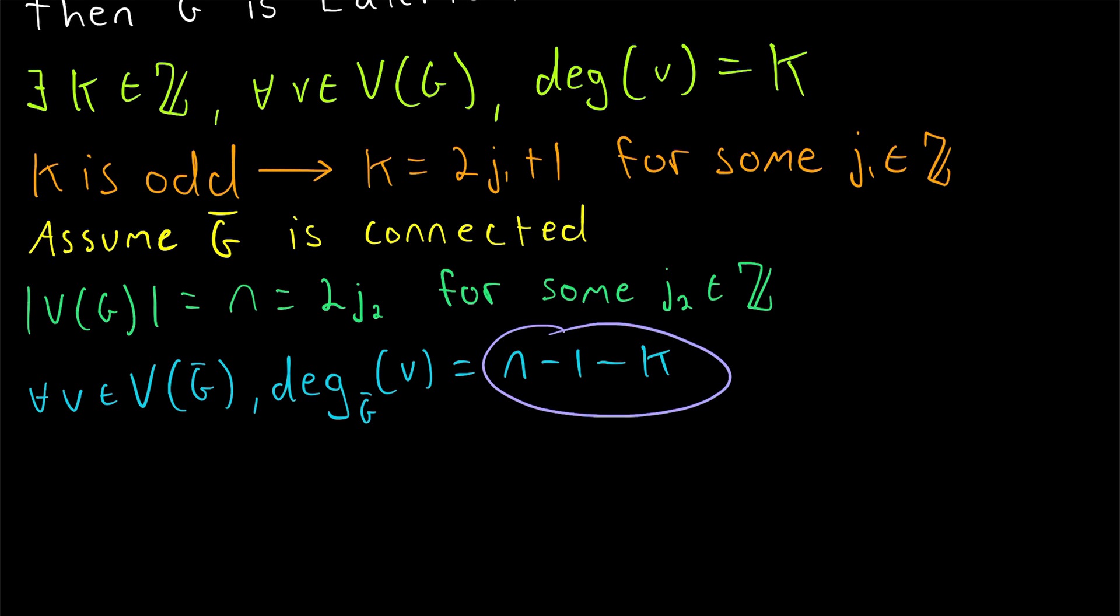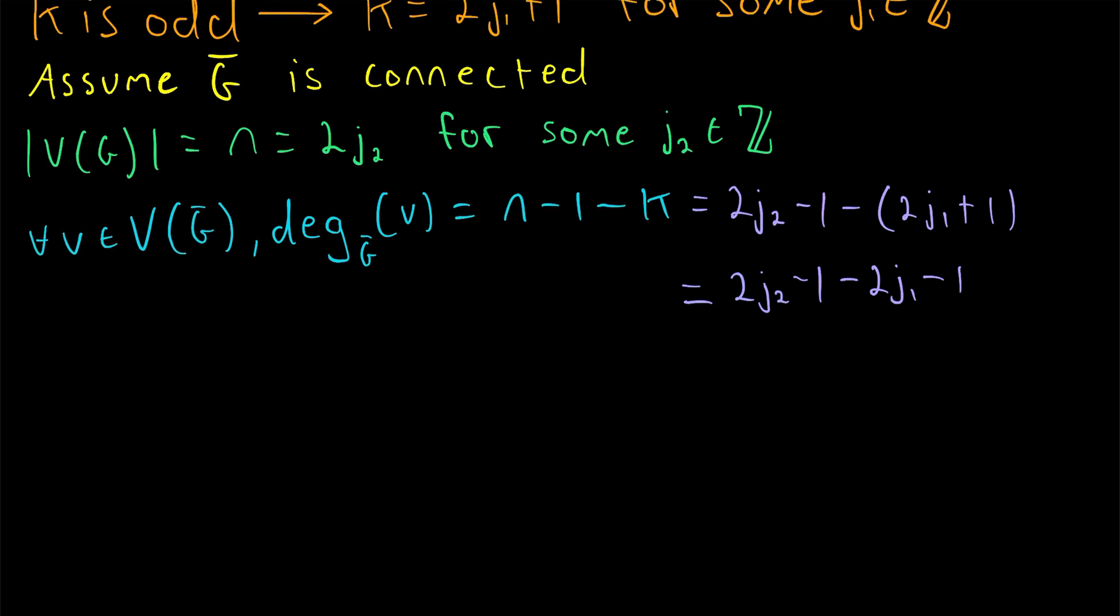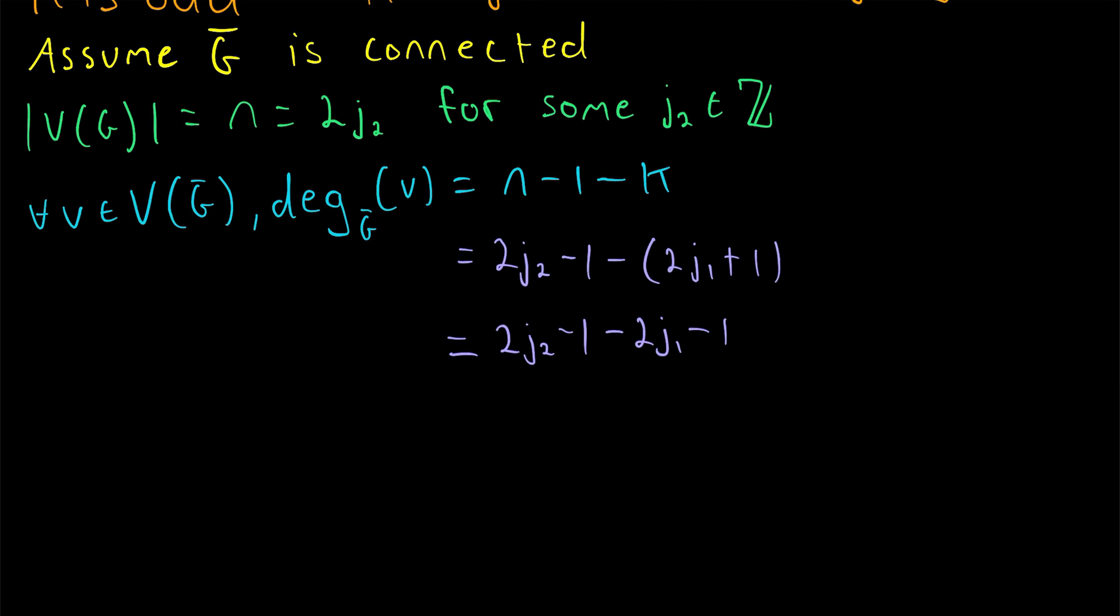Now, as you can probably see, all we need to do is some substitution here to show that this degree is even for every vertex. In place of N, we can substitute 2J2. So we'll write this is equal to 2J2 minus 1, and then minus K. And in place of K, we can put 2J1 plus 1. So we'll write that there, 2J1 plus 1. And then this is equal to 2J2 minus 1. Distribute this negative, so we have minus 2J1 minus 1. Let me go ahead and move these equalities down here.